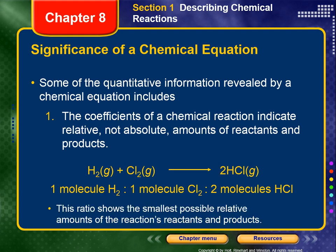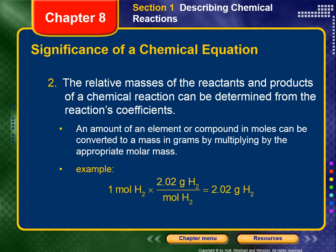What quantitative information does a chemical equation reveal? First, the coefficients indicate relative but not absolute amounts of reactants and products. For example, one molecule of hydrogen reacts with one molecule of chlorine to produce two molecules of HCl. If there were a billion hydrogen and a billion chlorine molecules, we would form two billion molecules of HCl. The 1:1:2 ratio shows the smallest possible relative amounts. Second, the relative masses of reactants and products can be determined from the coefficients — moles can be converted to grams by multiplying by the appropriate molar mass.